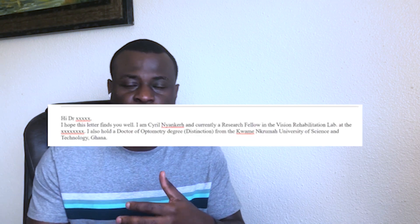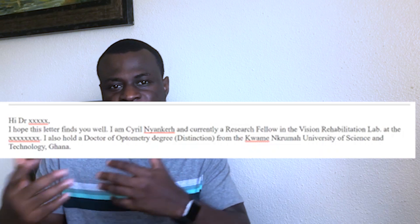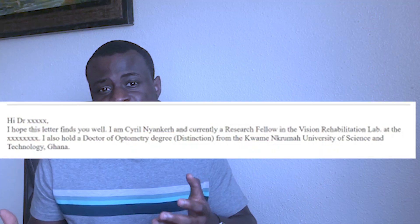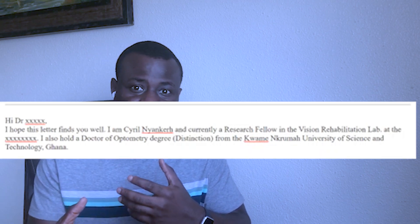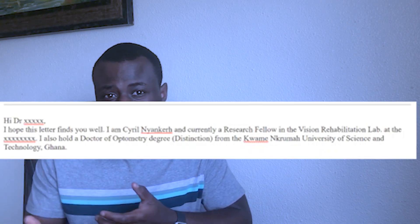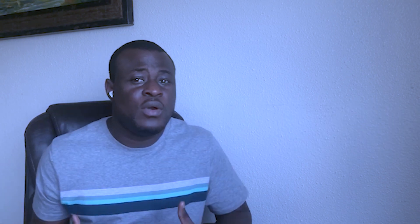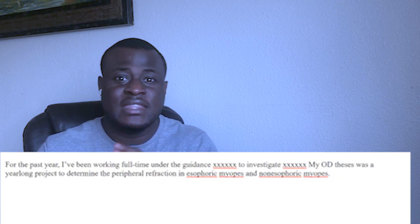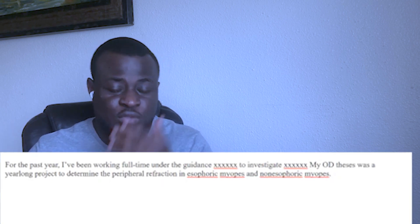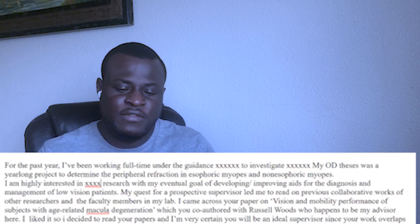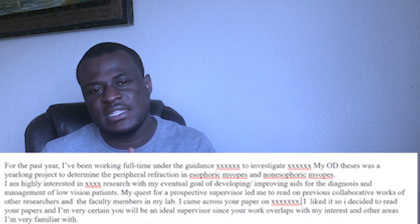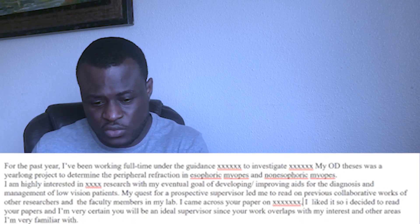In the next paragraph, talk about what you're currently doing and what you have done that ties into their research. Don't state the connection explicitly — put it in there so that when the professor reads it, they can align your interest with what they are doing. For example, say 'For the past year I've been working with so-and-so, doing this particular research,' or describe your master's thesis or undergraduate work that shows you're a good fit for the work they are doing.